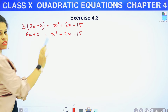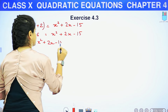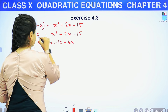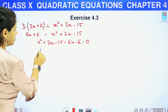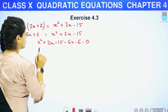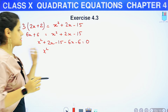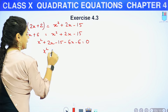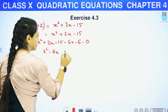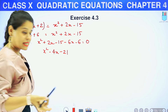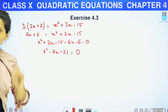एक साइड कर लेते हैं. X square positive है इसलिए सबको उस तरफ ले जाते हैं. So: X² + 2X - 15 - 6X - 6 = 0. X terms और numbers को solve करते हैं: X² as it is, 2X minus 6X = minus 4X, minus 15 minus 6 = minus 21. Finally we have a quadratic equation: X² - 4X - 21 = 0.